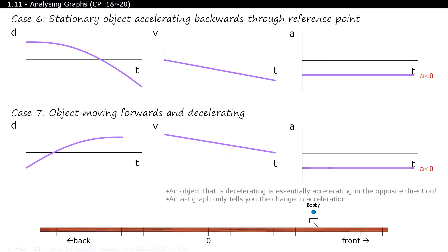One last thing about the AT graph — you can see that in both cases you produce the same exact graph. The area underneath an AT graph only tells you the change in velocity. It'll never tell you what your starting velocity is, but it'll tell you the slope of the VT graph.